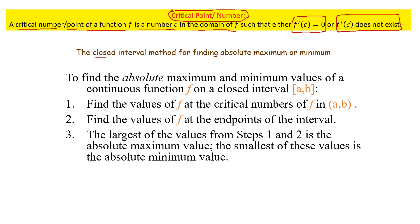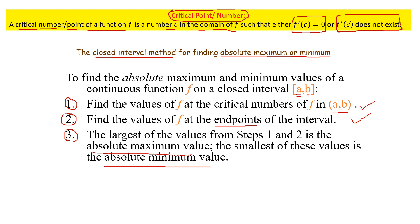We are going to use the closed interval method to find the absolute maximum or absolute minimum. Step 1: find the value of the function at the critical numbers lying within the interval [a, b]. Step 2: find the value of the function at the endpoints a and b. Step 3: among the critical number values and the endpoint values, determine the absolute maximum and absolute minimum.